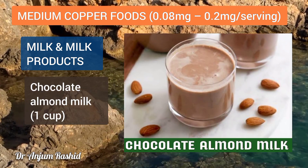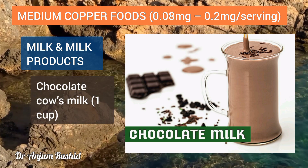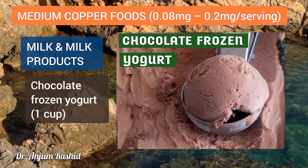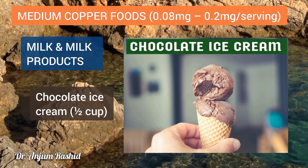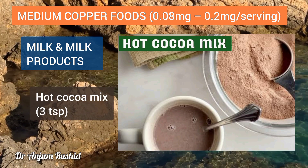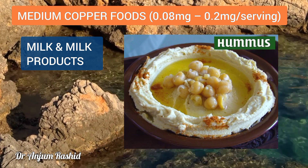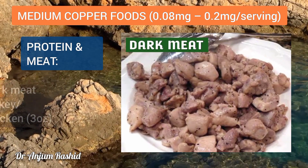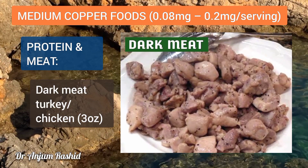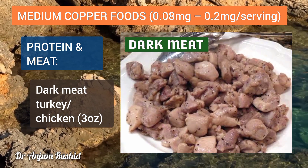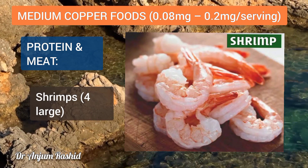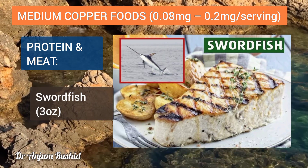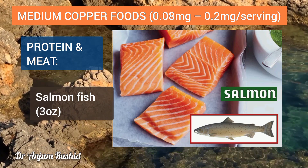Medium copper milk and milk products include chocolate almond milk (1 cup), chocolate cow's milk (1 cup), chocolate frozen yogurt (1 cup), chocolate ice cream (½ cup), hot cocoa mix (3 tablespoons), and hummus (1 tablespoon). Medium copper proteins include dark meat turkey or dark meat chicken (3 oz), shrimps (4 large), mussels (3 oz), swordfish (3 oz), and salmon (3 oz).